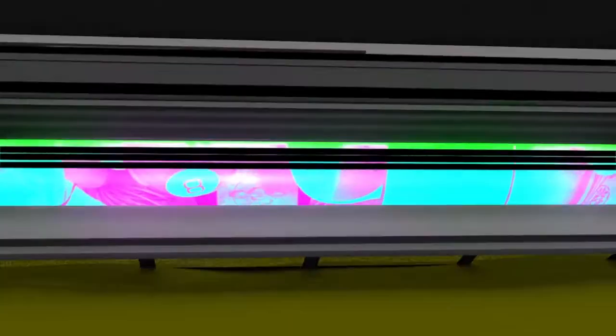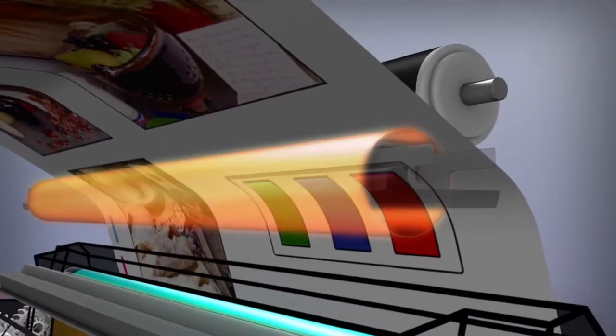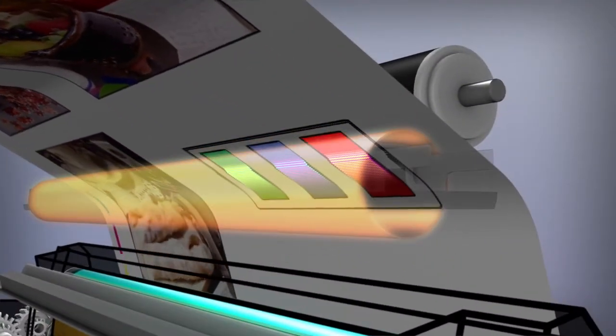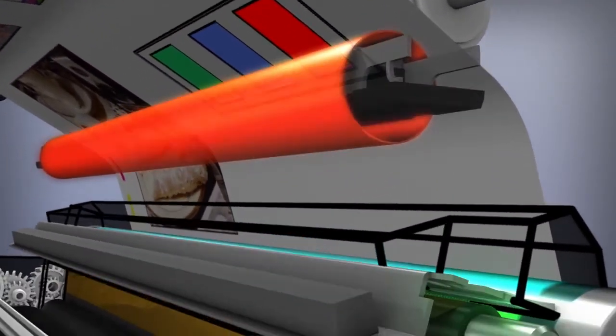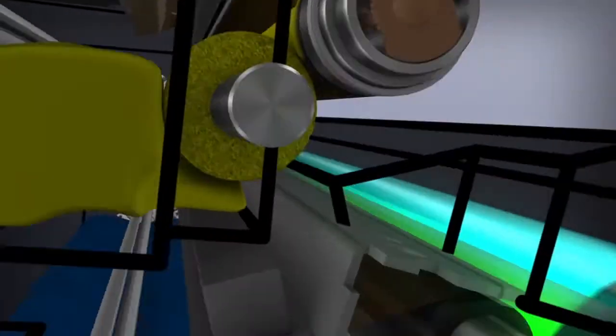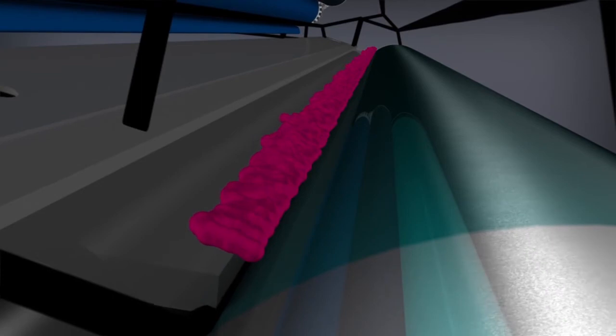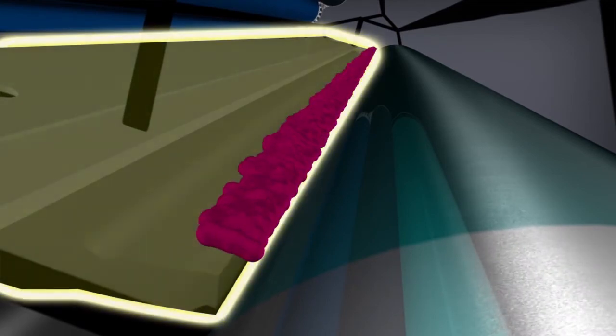The paper with the toner then passes through the fusing assembly where it is melted and fused to the paper. Any toner remaining on the OPC drum is cleaned and moved to the waste bin.